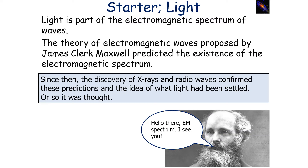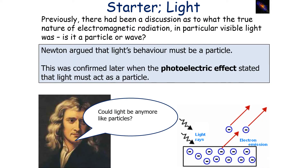Light is part of the electromagnetic spectrum of waves, and the theory of electromagnetic waves proposed by James Clerk Maxwell predicted the existence of the electromagnetic spectrum. Since then we had the discovery of X-rays and radio waves, and it was the idea that light must be a wave. We've had a discussion previously about the true nature of electromagnetic radiation, in particular visible light — was it a particle or was it a wave?